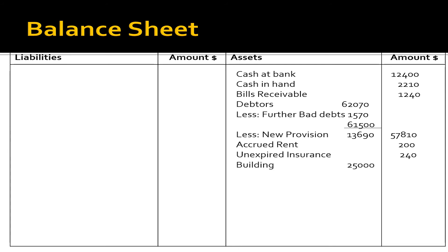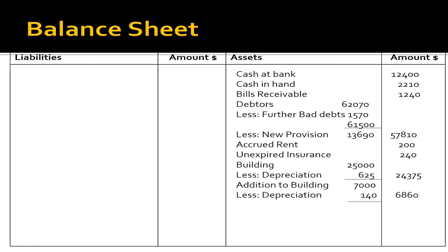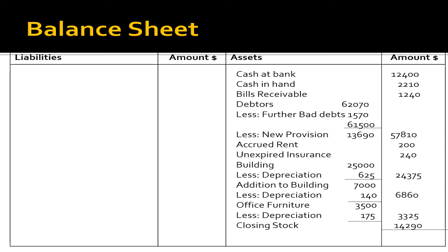Continuing with assets: building $25,000 less depreciation $625, totalling $24,375; addition to building $7,000 less depreciation $140, totalling $6,860; office furniture $3,500 less depreciation $175, totalling $3,325; and closing stock $14,290 on the asset side. The total of the asset side comes to $1,22,950.